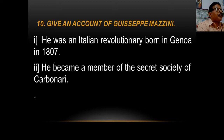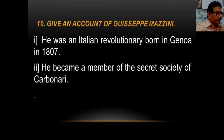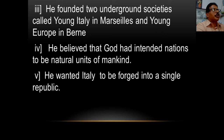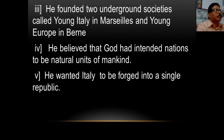Give an account of Giuseppe Mazzini. He was an Italian revolutionary born in Genova in 1807. He became a member of the secret society of the Carbonari. He founded two underground societies called Young Italy in Marseilles and Young Europe in Berne. He believed that God had intended nations to be natural units of mankind and that it was God's desire that there should be nation states. So he wanted Italy to be united into a single republic.